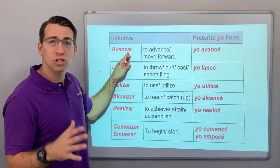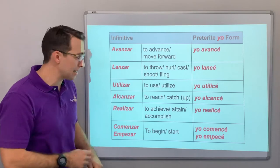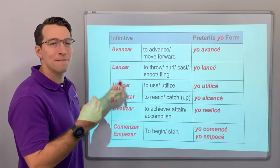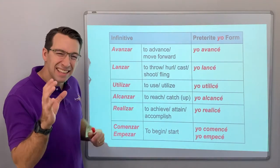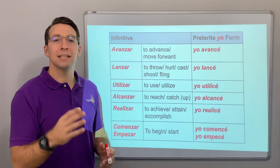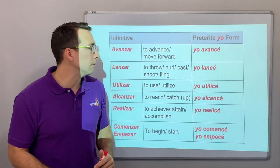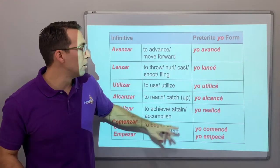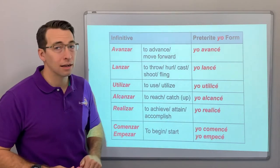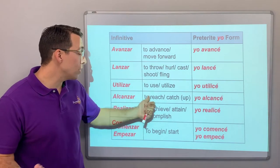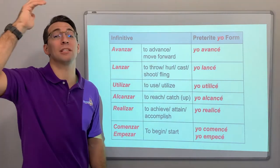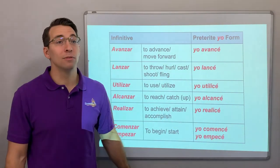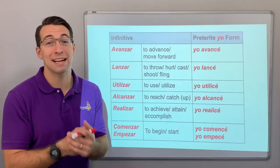And then -zar verbs. Common -zar verbs: avanzar, lanzar, utilizar, alcanzar, realizar, comenzar, empezar. It's a soft Z — avanzar, lanzar — not a hard Z like 'zoo,' it's a soft Z. So: yo avancé, yo lancé la pelota — I threw the ball. Yo utilicé un método. Yo alcancé el cumbre — I reached the top, like a mountain. Yo realicé mis metas — I achieved my goals.